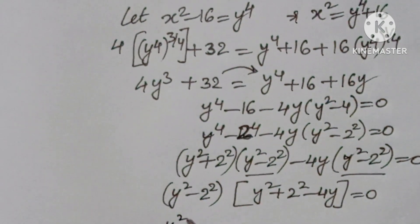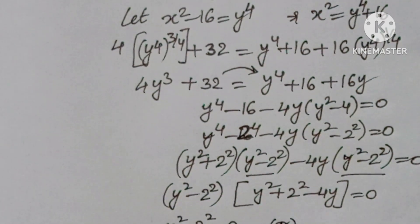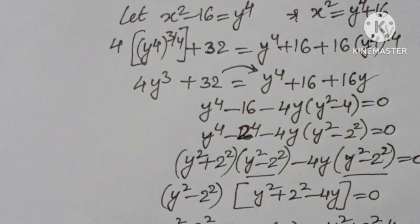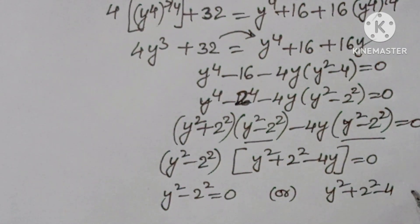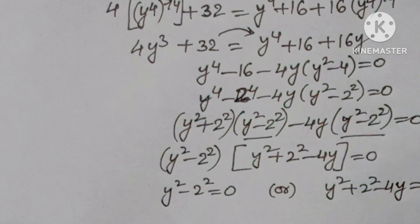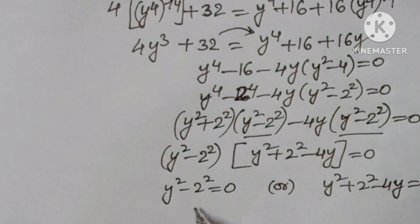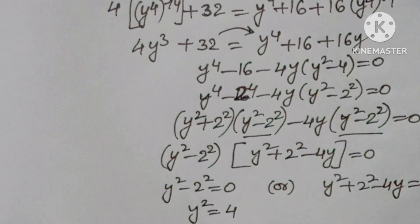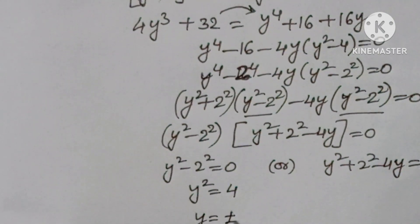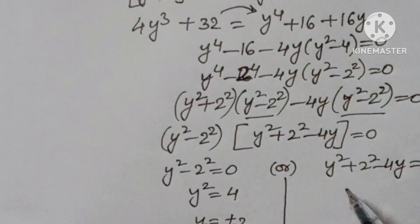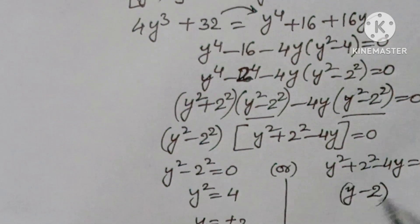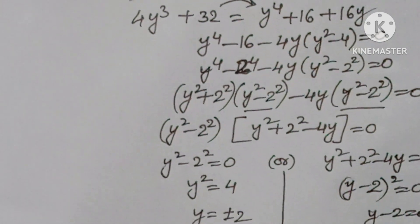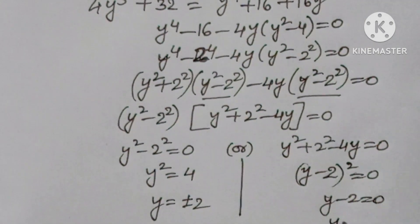Taking y squared minus 4 equals 0 gives y squared equals 4, so y equals plus or minus 2. For the second factor, y squared plus 4 minus 4y equals (y minus 2) squared equals 0, giving y equals 2.